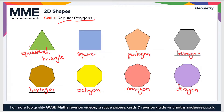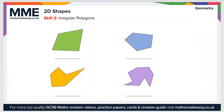The second topic is irregular polygons. Once again, a polygon is a shape made up of straight sides or edges, but an irregular polygon is one where the sides or edges are not all the same length.